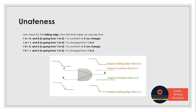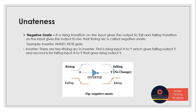Next is negative unateness. In negative unateness, if we give a rising input we get a falling output, and if we give a falling input we get a rising output — we get the inverted or opposite result. Examples of negative unateness are inverter, NAND, and NOR gates.